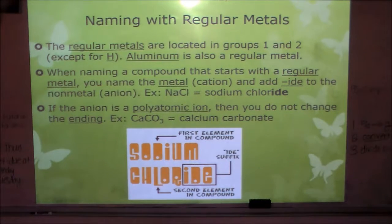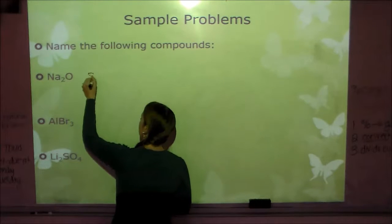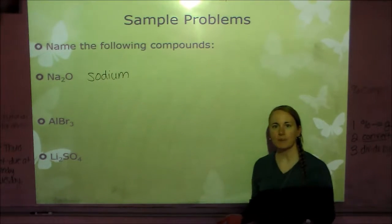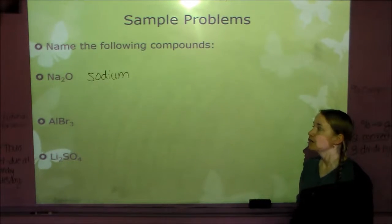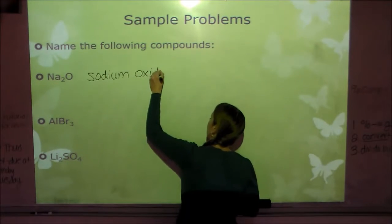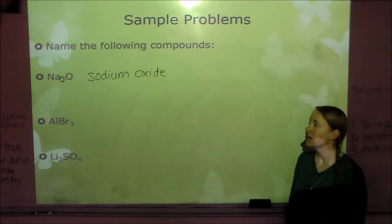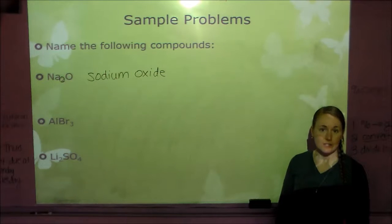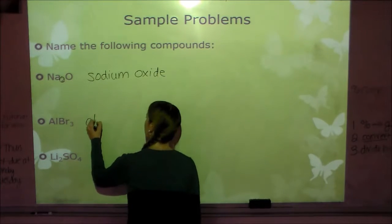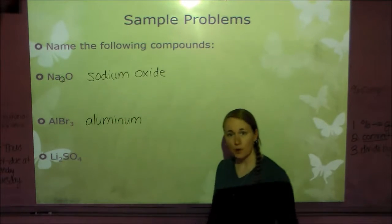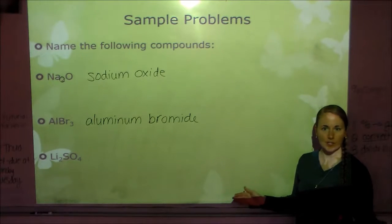Let's look at some examples. Na₂O: Na is sodium, and O is oxygen, but since O is the negative one we change the ending to get oxide. Notice we don't use prefixes like di or tri for regular metals — we don't focus on subscripts. So it's just sodium oxide. AlBr₃: Al is aluminum, Br is bromine, but because it's the negative one we call it bromide. Again, the subscript 3 doesn't matter in the name. So it's aluminum bromide.